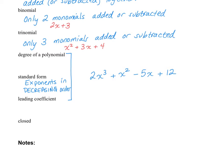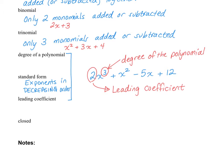Standard form is required for all your answers in my class. The degree of the polynomial is different than the degree of the monomial. The degree of the polynomial is found from the very first term, so in this case the degree is three. The leading coefficient is the term out in front of the first part of the polynomial. If it's written in standard form, then that would be my leading coefficient.